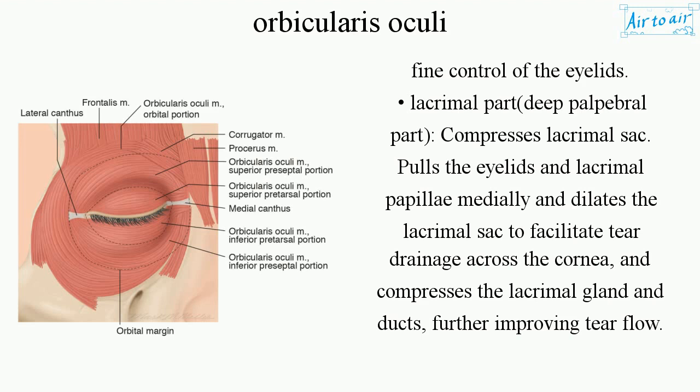Lacrimal part, also called the deep palpebral part: compresses the lacrimal sac, pulls the eyelids and lacrimal papillae medially and dilates the lacrimal sac to facilitate tear drainage across the cornea, and compresses the lacrimal gland and ducts, further improving tear flow.